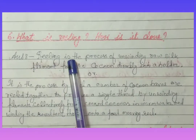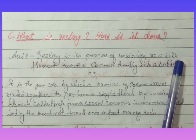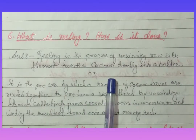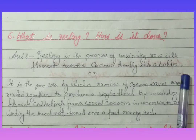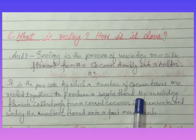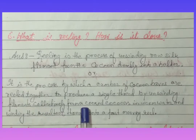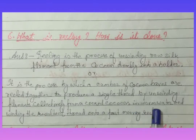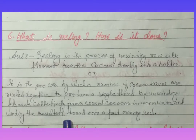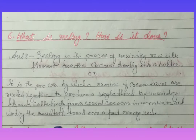What is reeling and how is it done? Reeling is the process of unwinding raw silk filament from the cocoon directly into a holder. Or, it is the process by which a number of cocoon threads are reeled together to produce a single thread by unwinding filaments collectively from cooked cocoons in warm water and winding the resultant thread onto a fast-moving reel.